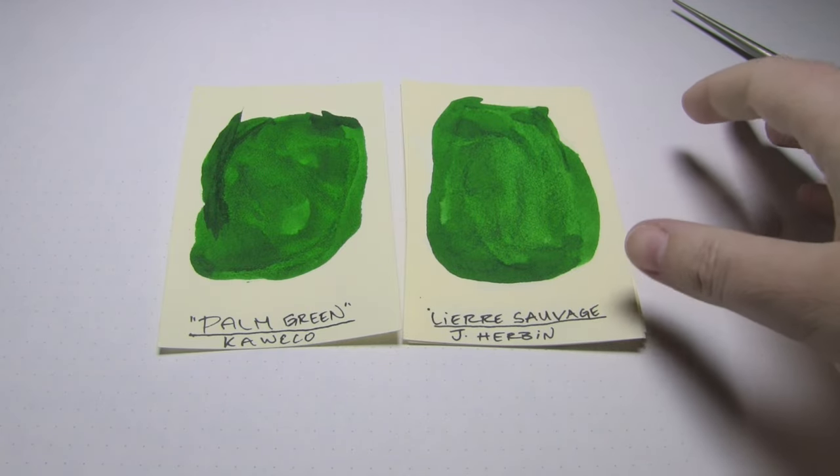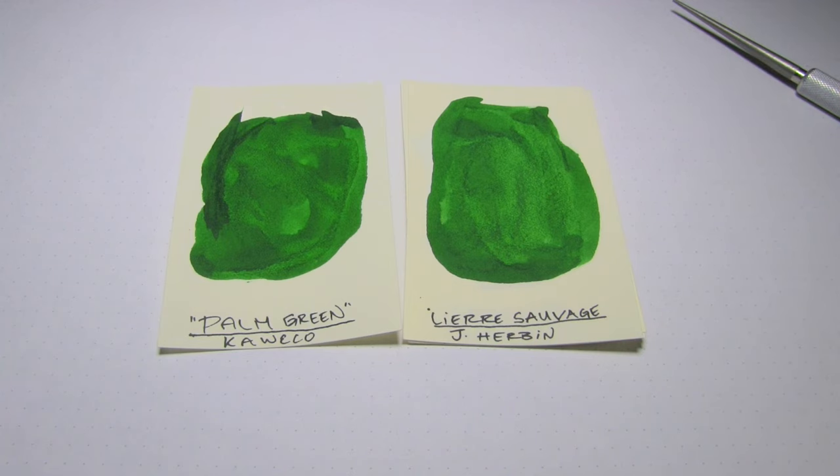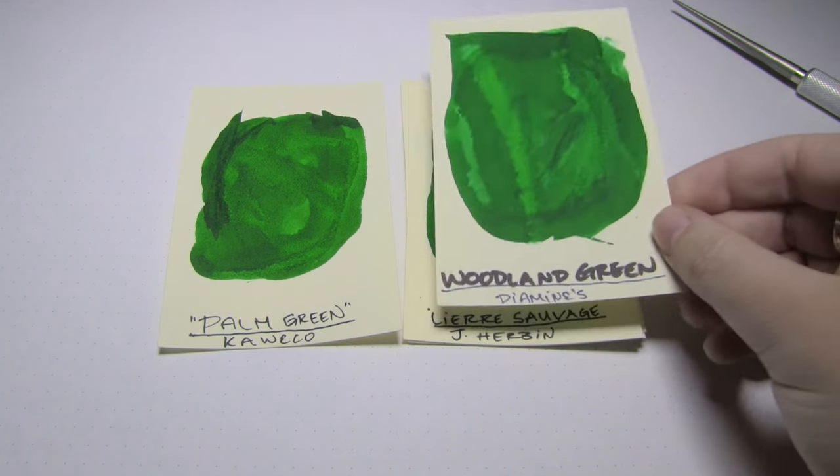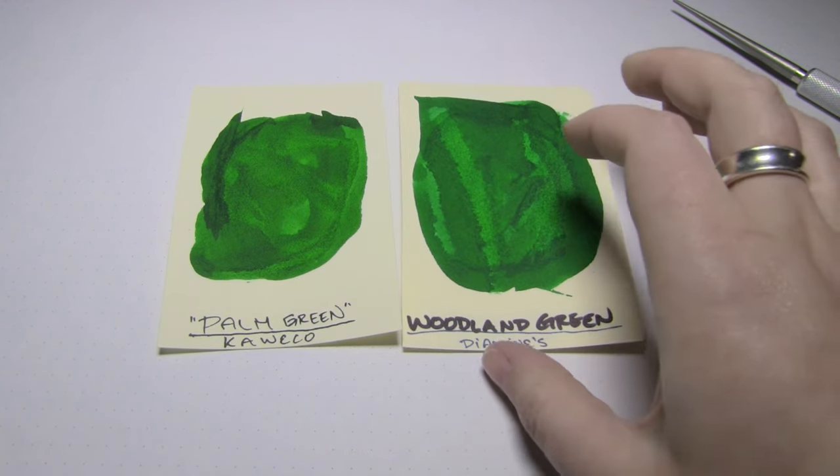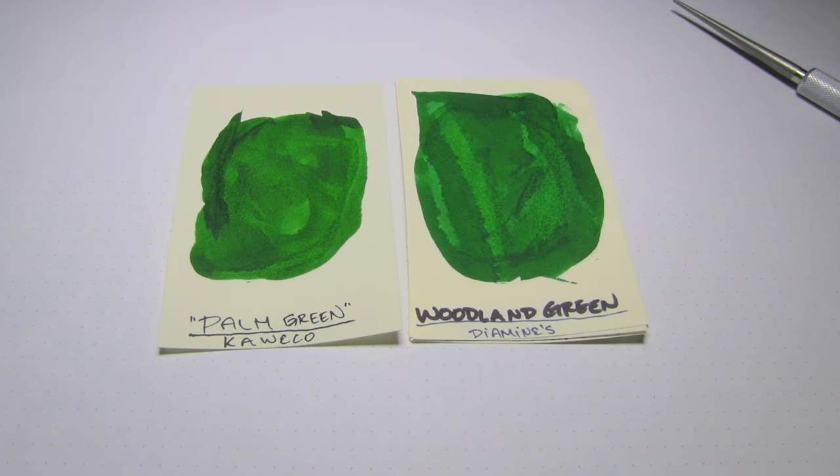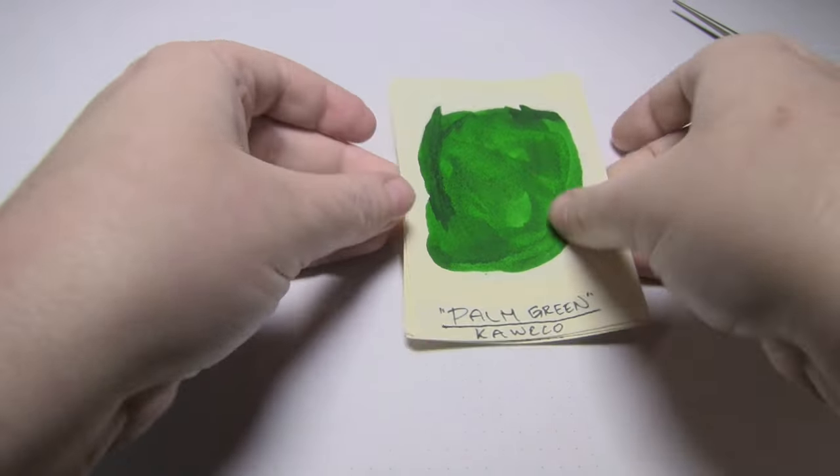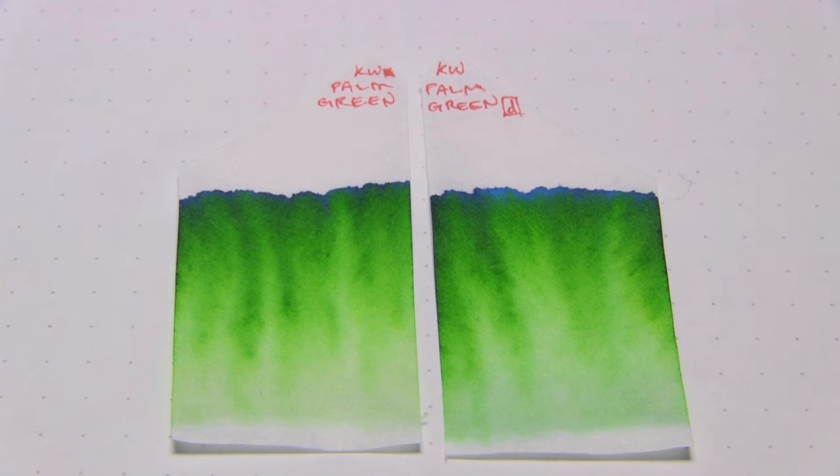Here's Gerbain's L'Ere Sauvage, which is a bit lighter. Maybe a tiny bit more yellow. Not as saturated. And lastly, Diamine's Woodland Green, which is just a little bit more blue. But not that you can tell from the camera. So there are the comparisons.